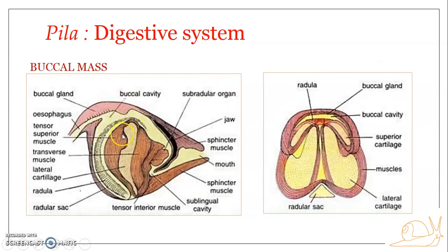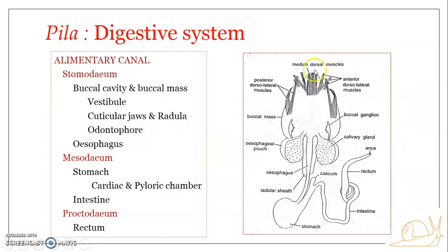This shows a vertical longitudinal section of the buccal mass, and this is how it looks. The buccal mass is provided with plenty of muscles — several sets of muscles — for the movement of the buccal cavity as well as the movement of the radula. The radula is a unique structure associated with the buccal cavity of the mollusk. Here you can see several sets of muscles.